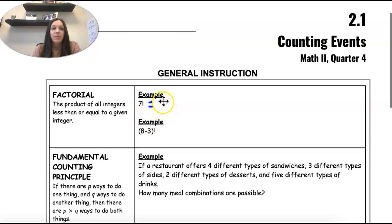So I take what I'm given, 7, and then you multiply all the way down to 1. Times 6, times 5, times 4, times 3, times 2, times 1. So it's all integers less than or equal to the one you're given.